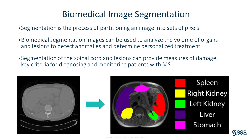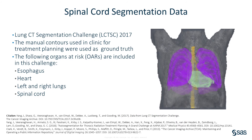In this demo, I'll be showing you an example of automatic biomedical image segmentation using the deep learning, image, and biomed image action sets. This pipeline will read in biomedical image data, train a neural network for spinal cord image segmentation, score a test set, and quantify the results. The data for this demo come from the 2017 Lung CT Segmentation Challenge — a publicly available dataset containing 60 patient images in DICOM format. Along with these images are corresponding DICOM RT files that contain contoured regions of four different organs: the esophagus, heart, left and right lungs, and spinal cord.